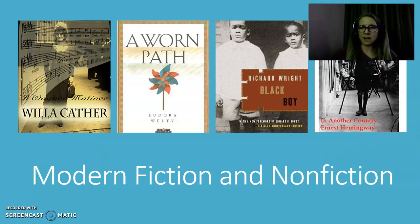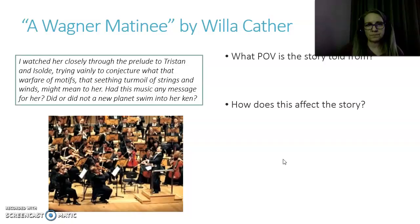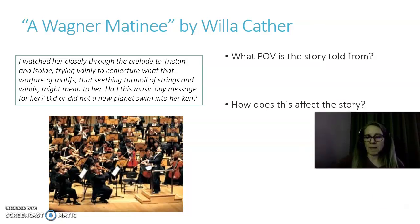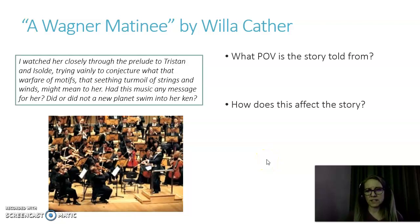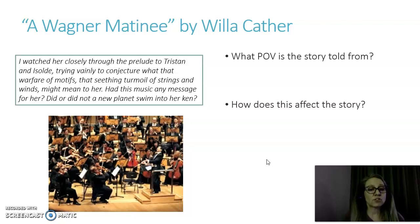Let's start with modern fiction and nonfiction. These are the pieces we read in that unit. For "A Wagner Matinee," go back to your reading journals to review. Concentrate on what point of view the story is told from and how that affects the story. From this excerpt: "I watched her closely through the prelude to Tristan and Isolde, trying vainly to conjecture what that warfare of motifs and that seething turmoil of strings and winds might mean to her." Whose perspective is that? What's the point of view, and how does it impact the story?